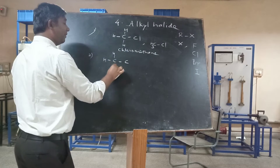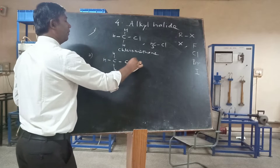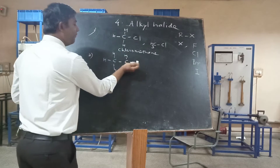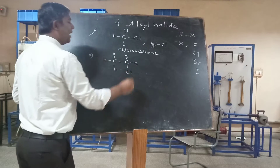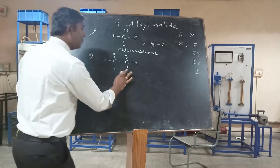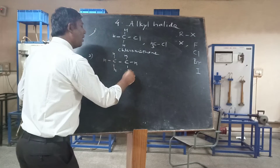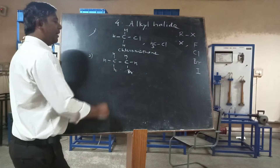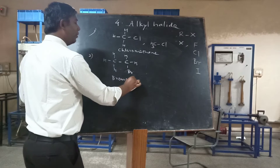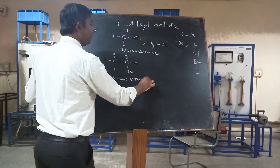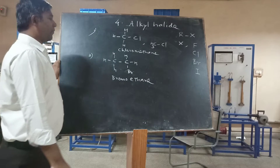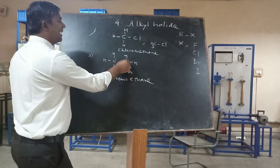Next example: if we take ethane and replace one hydrogen by bromine, we get bromoethane. The name is simply bromoethane.